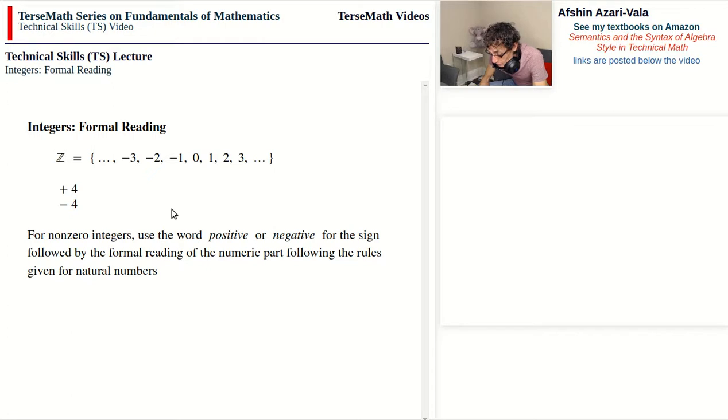So all the rules that we had for the formal reading of natural numbers apply as well. Such as numbers from 21 to 99, if they consist of two words then they are hyphenated. And just as with natural numbers, the use of the word 'and' is prohibited in the formal reading of integers.